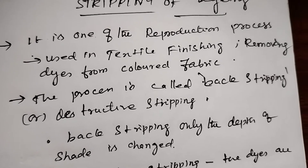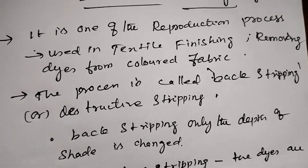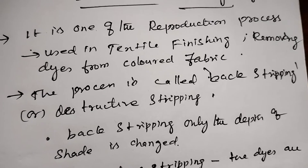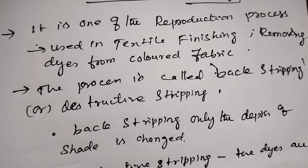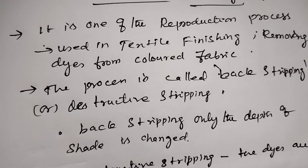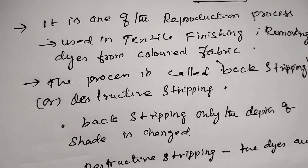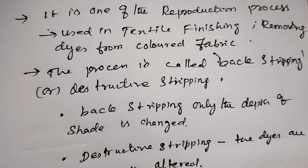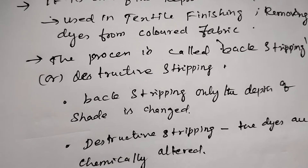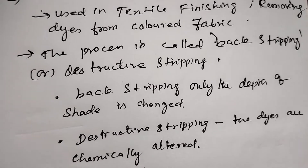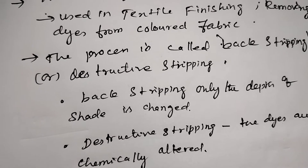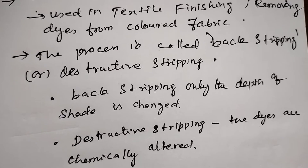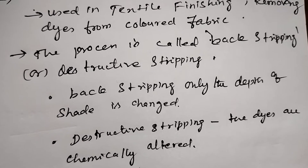Back stripping is where only the depth of shade is changed. The depth of shade is changed in back stripping. In destructive stripping, the dyes are chemically altered — we can alter the chemical applied. This is destructive stripping.